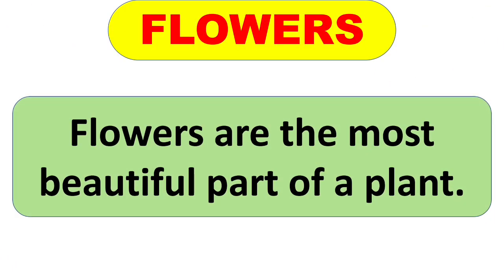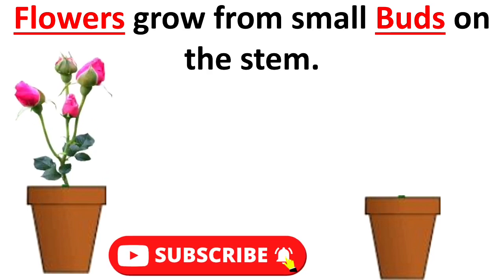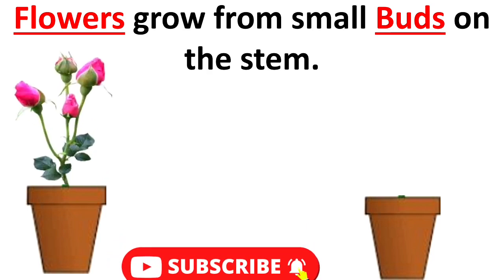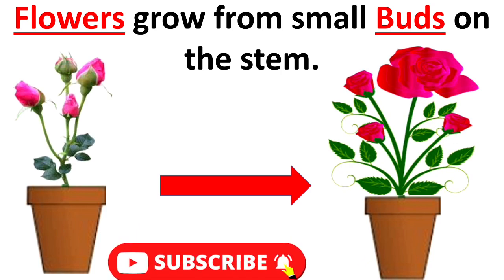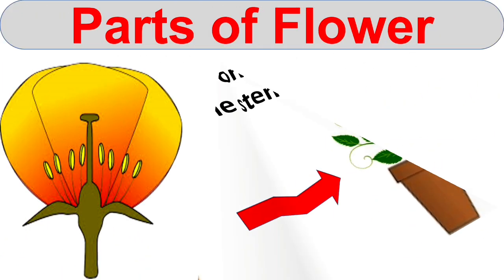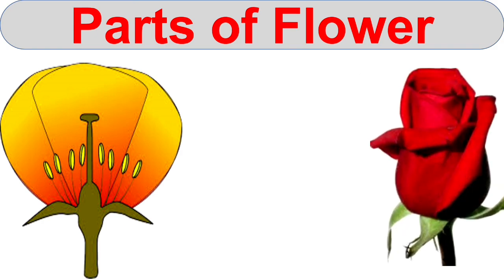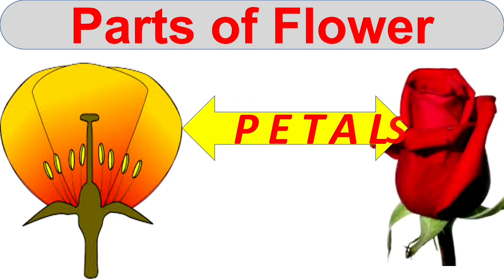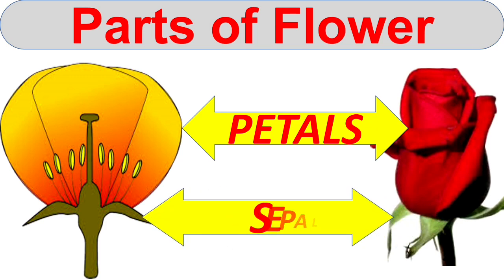Flowers are the most beautiful part of a plant and flowers grow on the stem. It appears as a bud, and the bud changes into a fully grown flower. The brightly colored parts of the flower are called petals. In some flowers there are small green structures below the petals known as sepals.